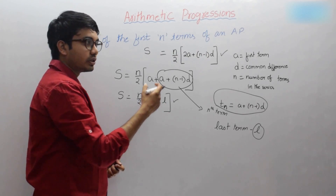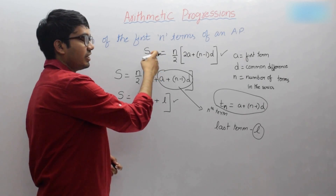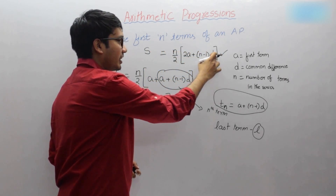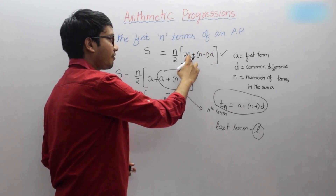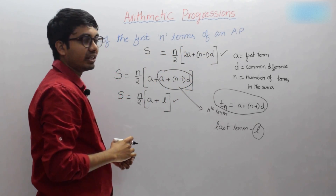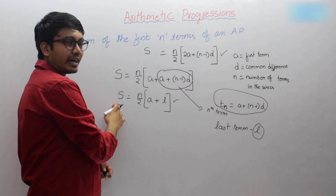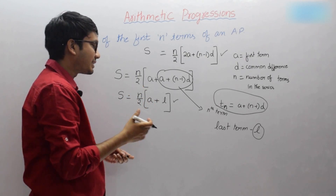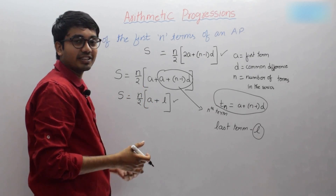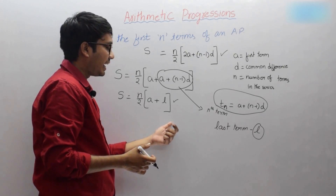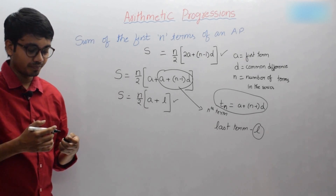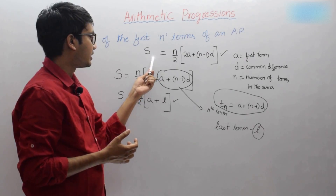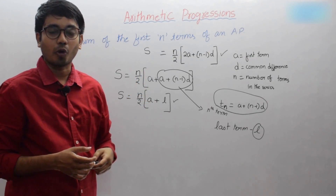So you can use two formulas. Either S equals n by 2 into 2a plus n minus 1 into d — when the common difference, first term, and number of terms are given — or S equals n by 2 into a plus l, where n is the number of terms, a is the first term, and l is the last term. Depending upon the problem, you can use either formula.